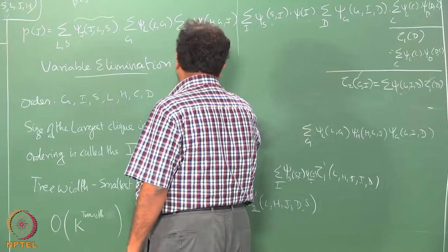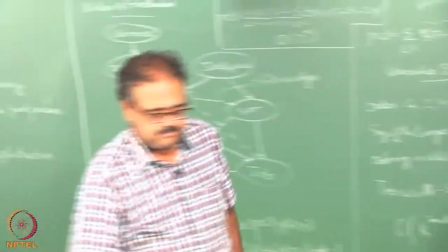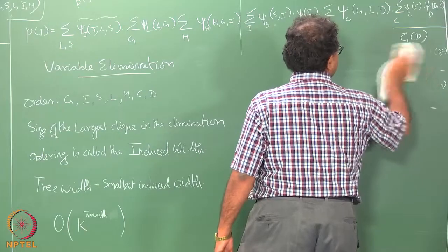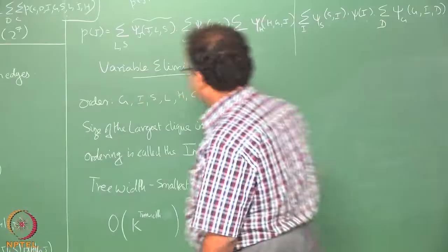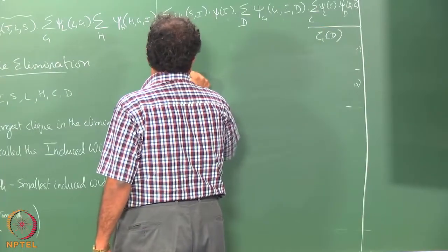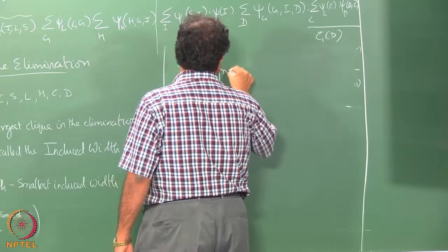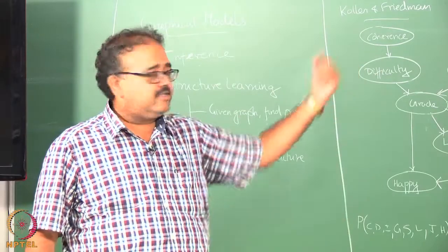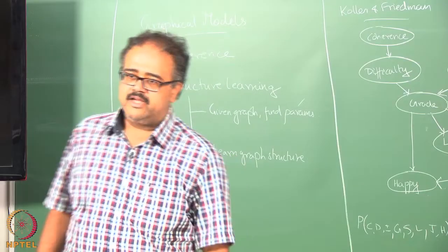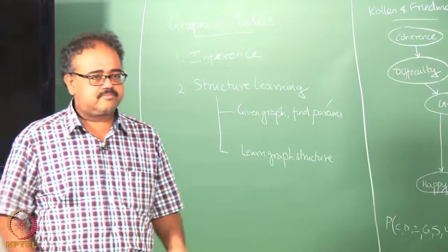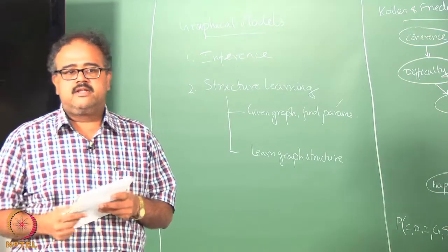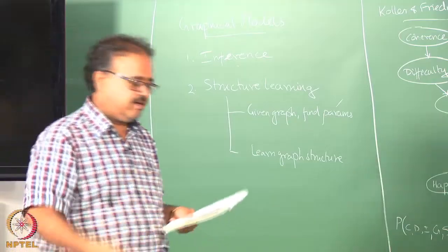The most popular of these is called belief propagation, where you have some kind of incremental way of computing these tau factors by passing what are known as messages between the nodes. The nice thing about belief propagation is that it allows you to reuse a lot of the computation already done for answering different marginal queries.